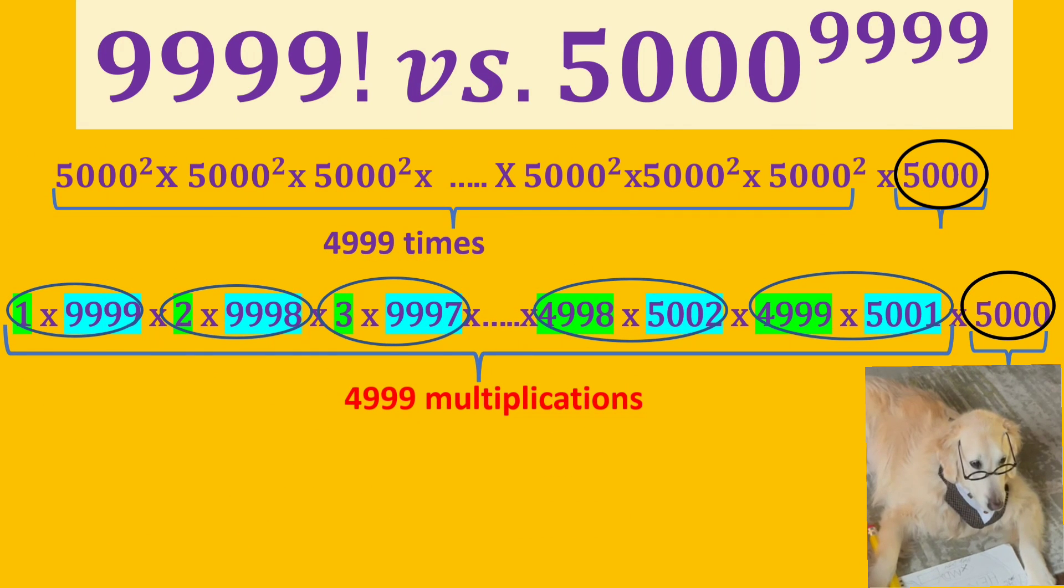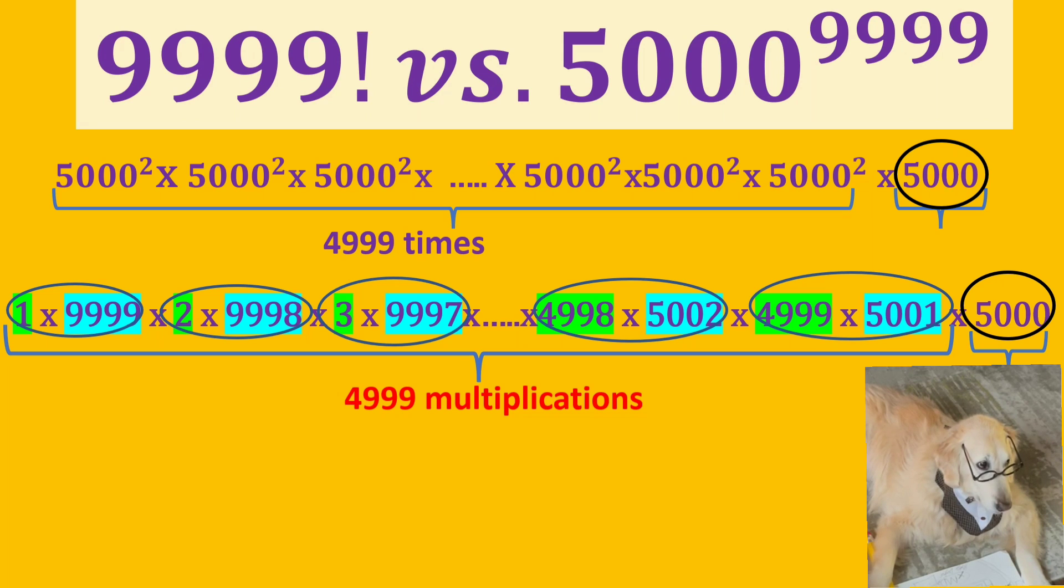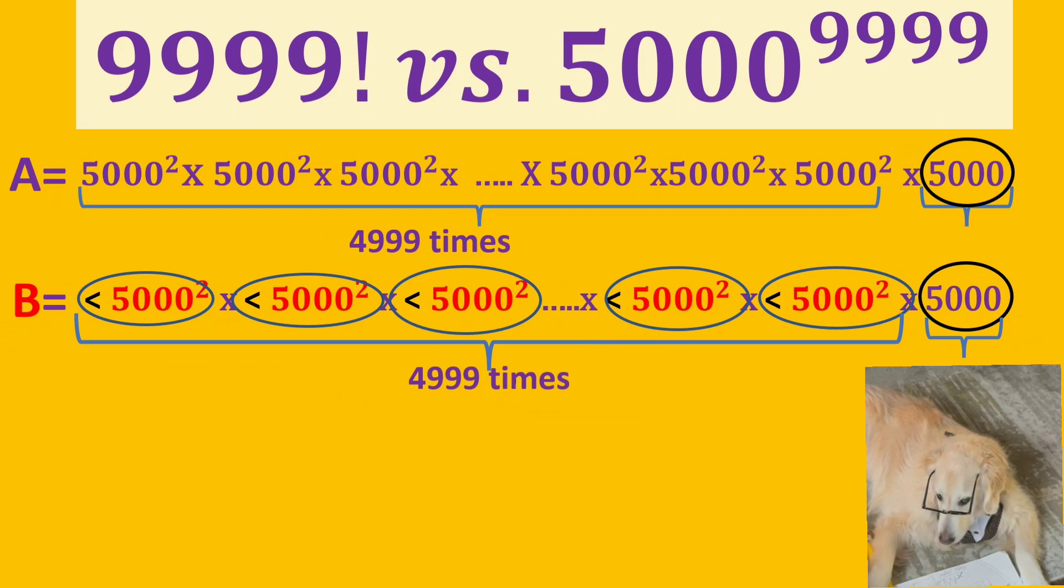Now, we will compare those multiplications to find which one is larger. They both have 4999 pairs and one 5000. Because we know the multiplication of each pair in 9999 factorial is smaller than 5000 squared, we can write it like this.